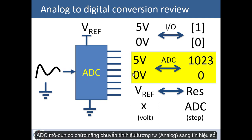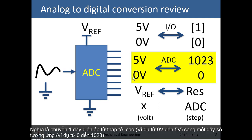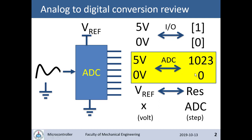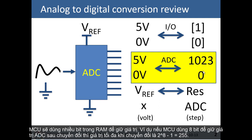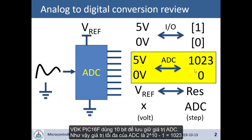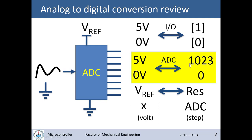In a microcontroller there is another hardware module called the ADC module, which converts a range — for example from 0 to 5 volts. You can place any voltage between 0 and 5, and the ADC hardware inside the microcontroller will translate it into a multi-bit value. In the 16F microcontrollers, it uses 10 bits to store the conversion result, so 5 volts converts to 1023 and 0 volts converts to 0.